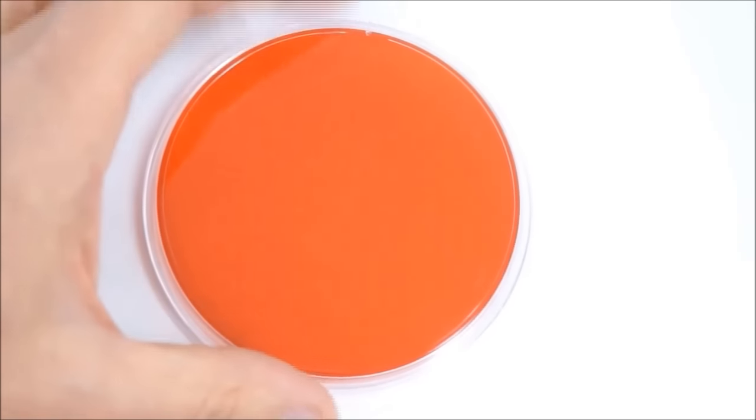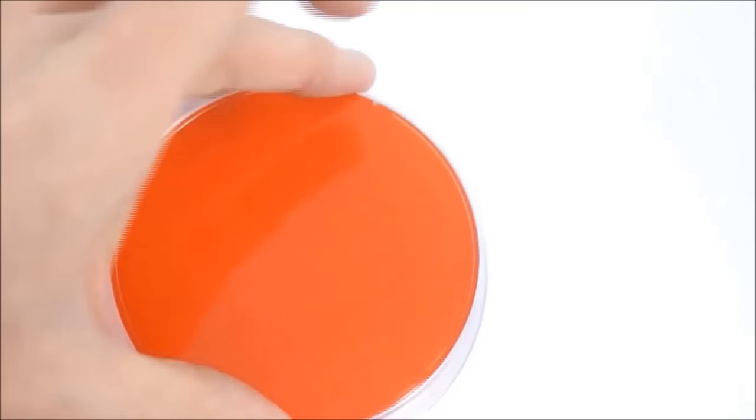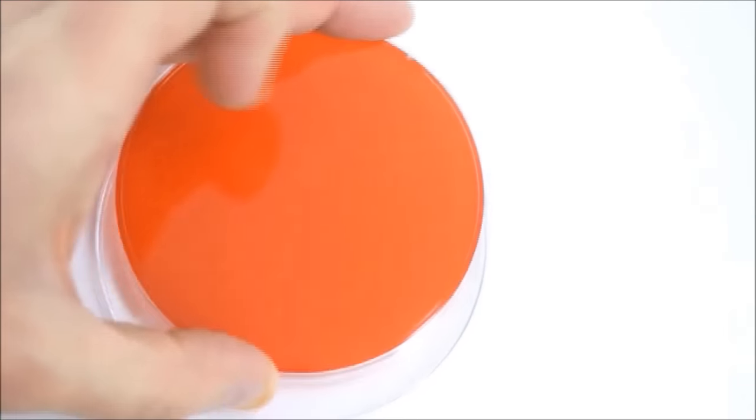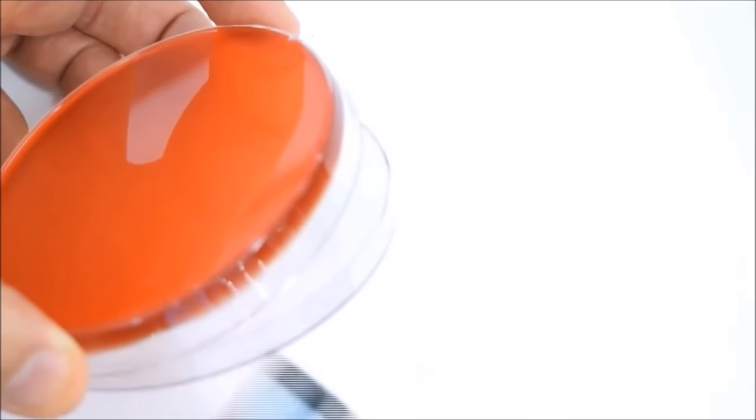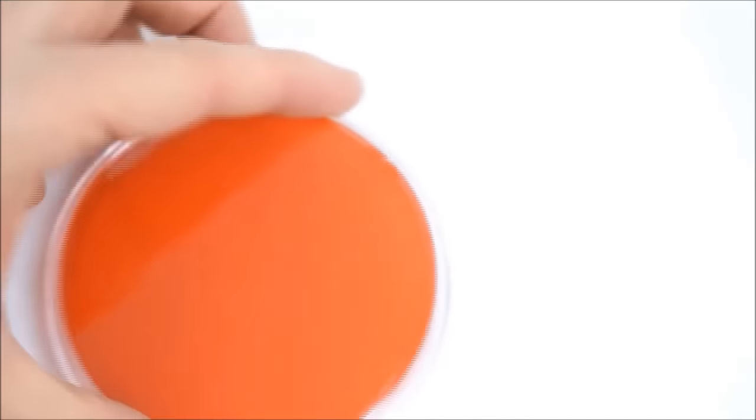The first thing you should do is label your agar plate, and you'll always label them on the bottom side. So we're going to label that side of the agar plate rather than on the lid, and that's because lids can easily fall off or get mixed up. So you want to label the side that's going to have the bacteria on it.